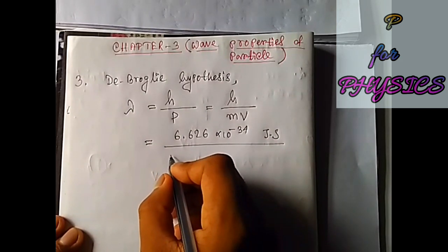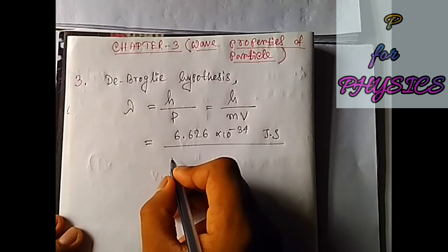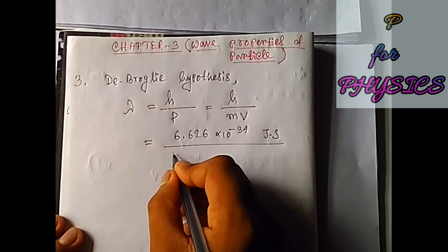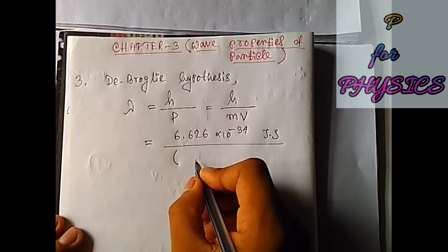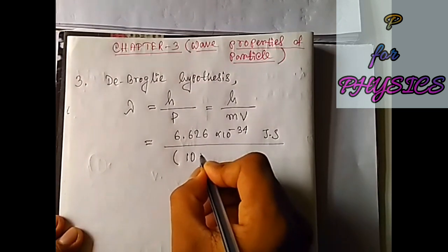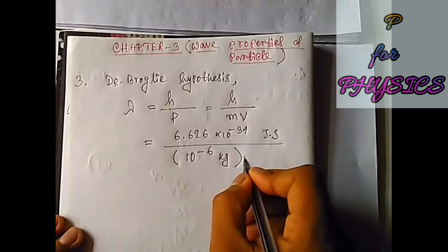The mass is 1 milligram, and if we convert it into SI units, we have to write it in kg, which will be 10^-6 kg.